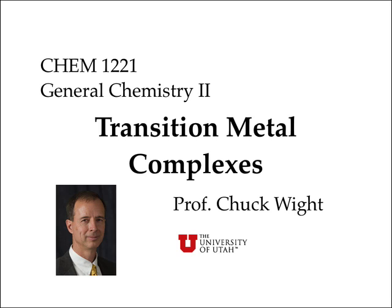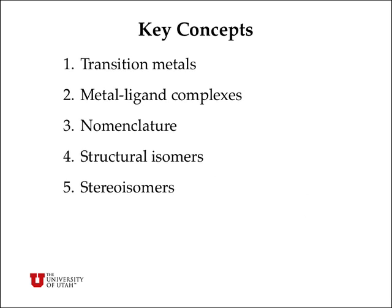Hi. Welcome back to General Chemistry 2. My name is Chuck White, and today we're going to talk about transition metal complexes. First we're going to talk about transition metals, which are metals where we're filling up the D-level shells in the periodic table. We'll talk about how these metals can form chemical bonds to ligands using Lewis acid-base interactions, nomenclature and how to name the complexes, and how structural isomers and stereoisomers can arise from the different arrangements of ligands around a metal.